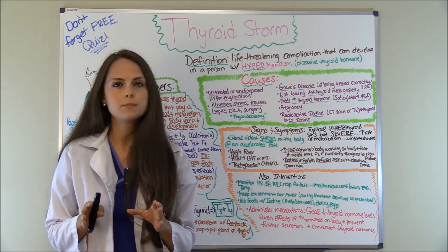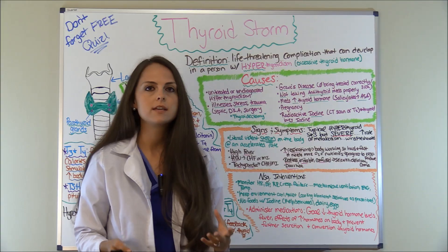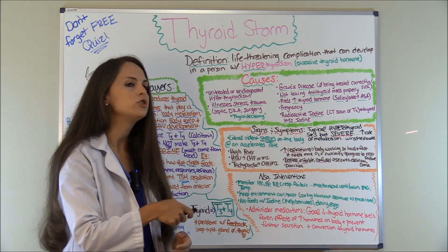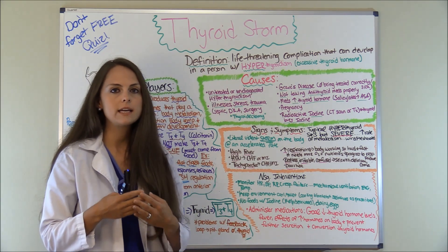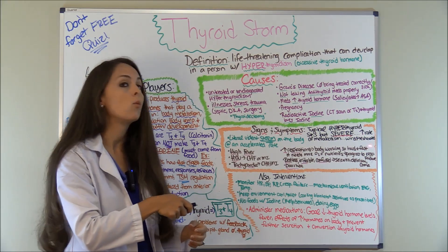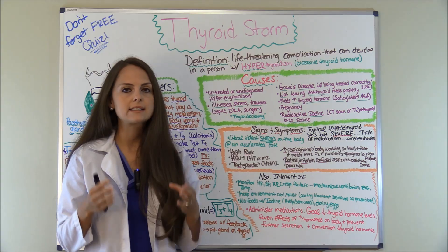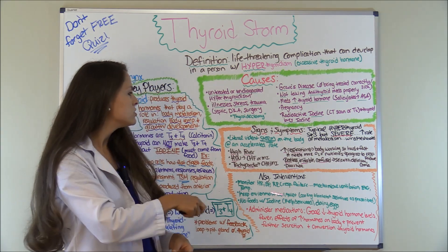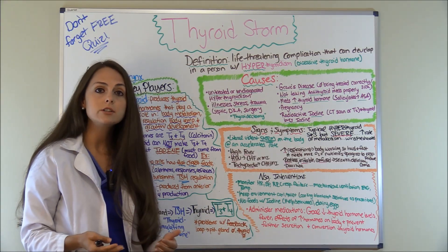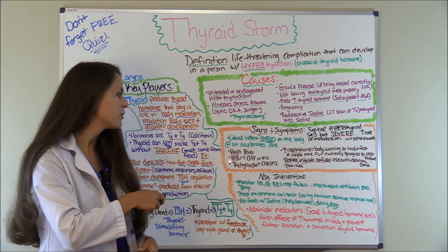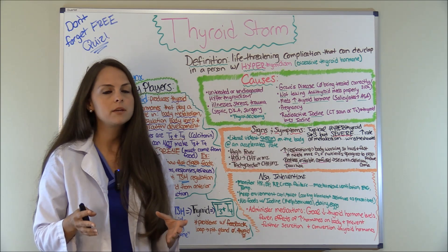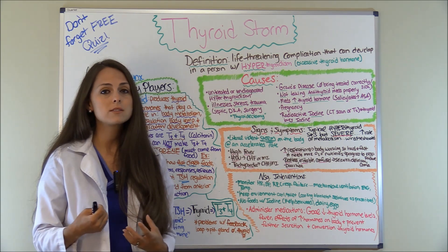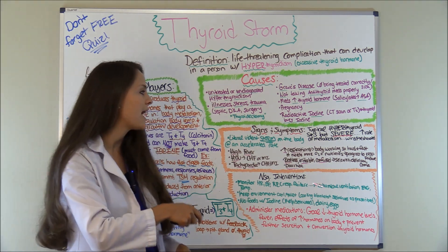So how is your patient going to look? What are those big signs and symptoms you need to know for NCLEX? Typically they're going to have those typical hyperthyroid signs and symptoms, but they are going to be severe, because the body has all these excessive hormones and everything's going to be working at an accelerated rate to the point of death. Instead of just having heat intolerance, they're going to have a high fever. They're going to have hypertension and tachycardia to the point where they might have a myocardial infarction or go into congestive heart failure, because that heart muscle is exhausted and can't tolerate anymore.